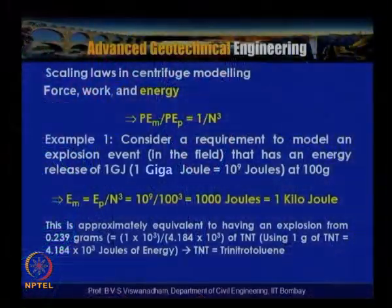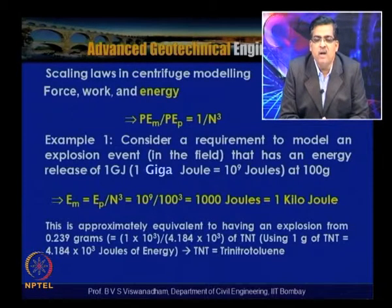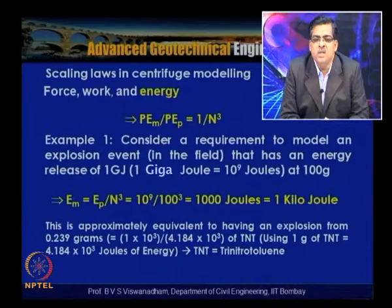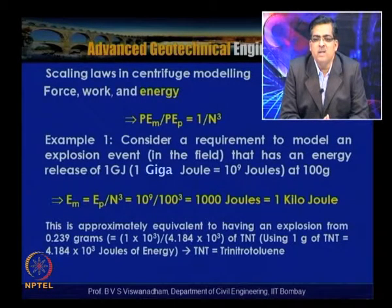Example 1: Consider a requirement to model an explosion event in the field that releases 1 gigajoule (10⁹ joules) at 100 gravities. The energy in the model is E_model = E_prototype / n³ = 10⁹ / 100³ = 1000 joules, that is 1 kilojoule.